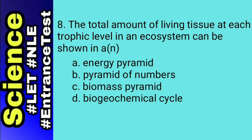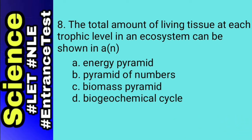For number 8, let's define all the choices. Pyramids of energy show the relative amount of energy available at each trophic level of a food chain or food web. Pyramid of numbers shows the relative number of individual organisms at each trophic level in an ecosystem. Biomass illustrates the relative amount of living organic matter available at each trophic level in an ecosystem. The biogeochemical cycle is a cycle of matter involving biological, geological, chemical, and human factors. The answer is letter C, biomass pyramid, because the question pertains to living tissue at each trophic level.